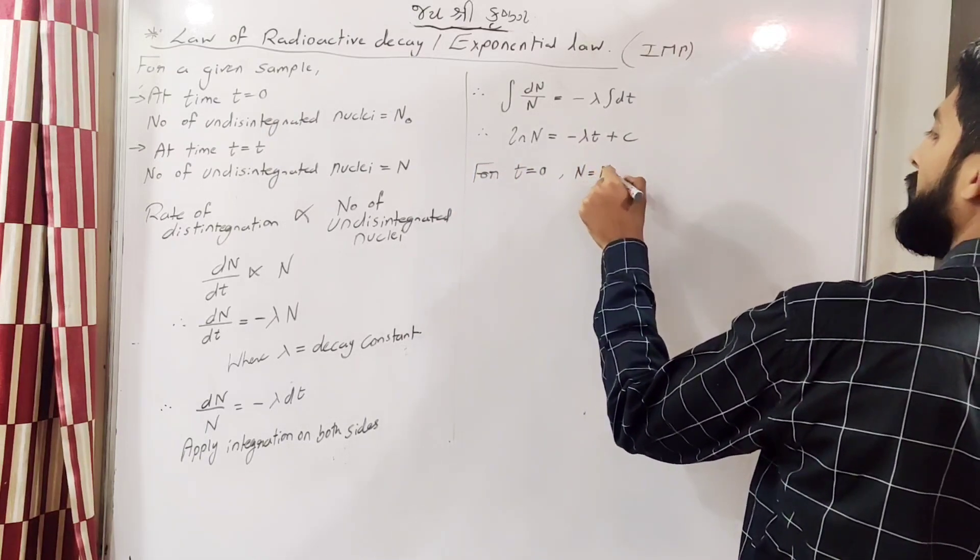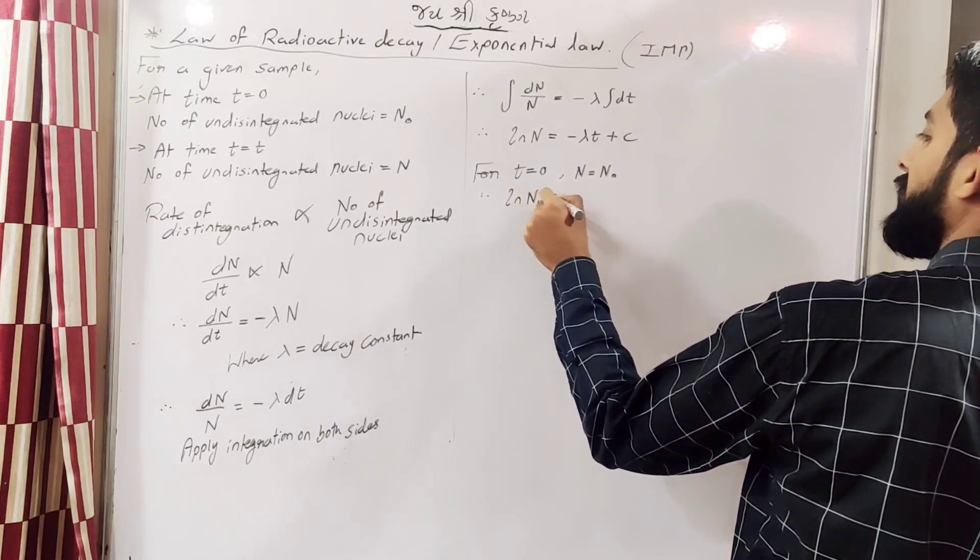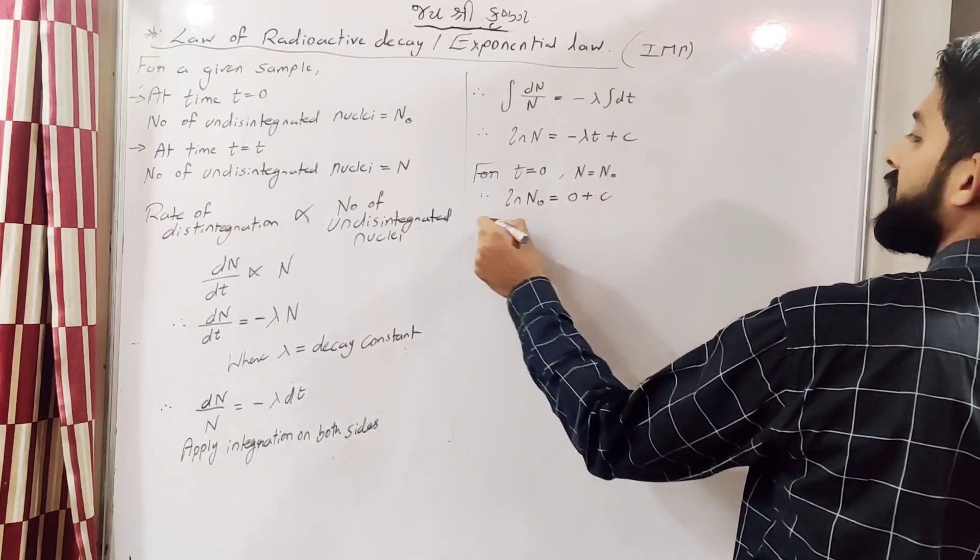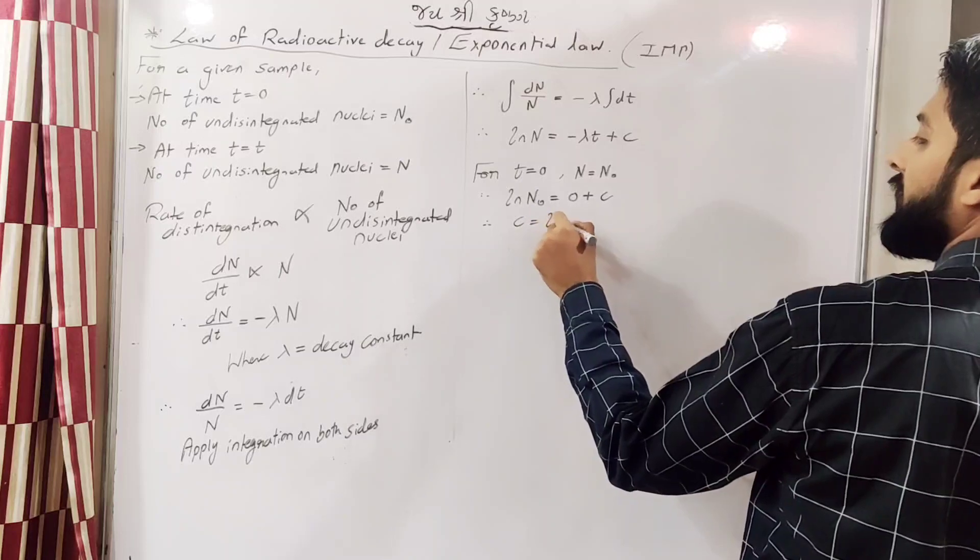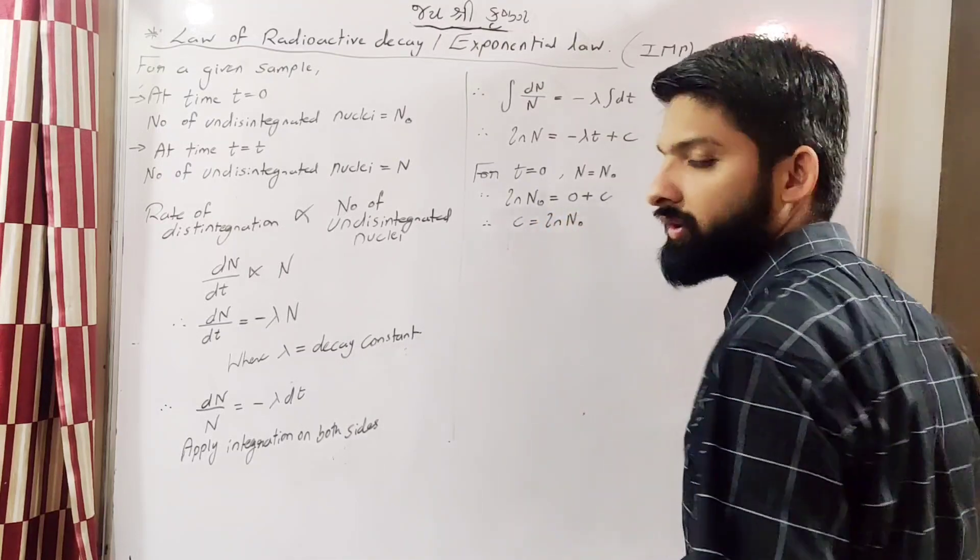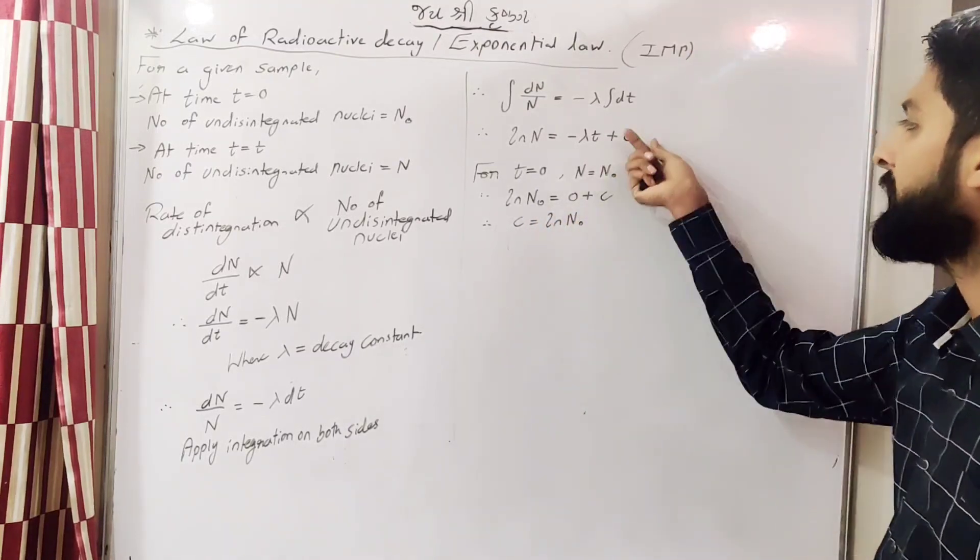At t equals 0, n equals n0, so ln n0 equals 0 plus c. So the value of c is ln n0.